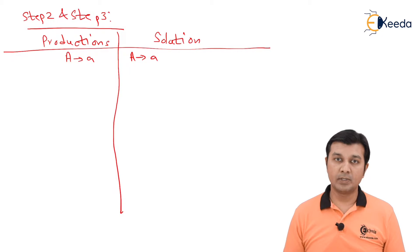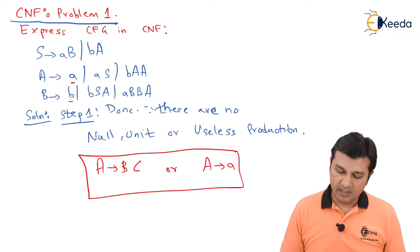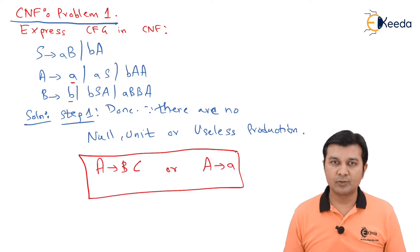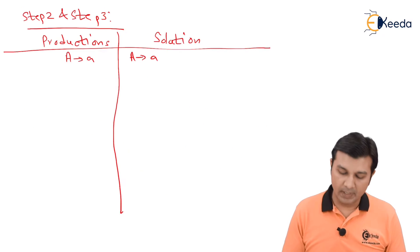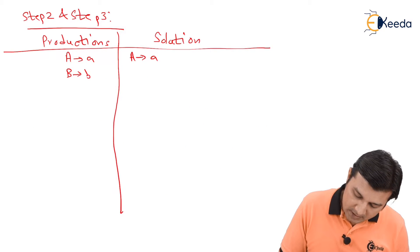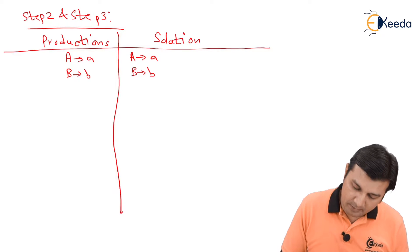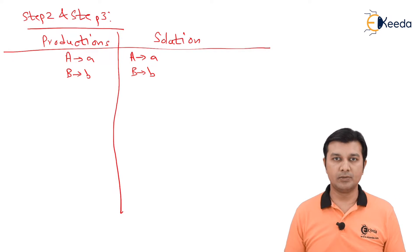Going ahead to the next simplest one: B gives small b. B gives b is also already in CNF, so we can directly add it to the solution.